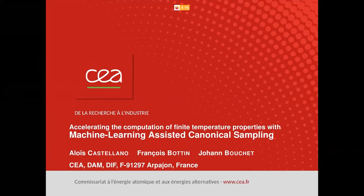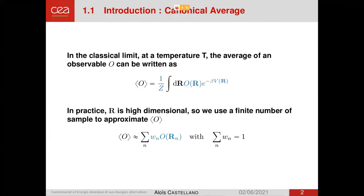The goal of the method is to accelerate the computation of finite temperature properties. And when we think about finite temperature properties, what we are really doing, at least in the classical limit, is a high-dimensional integral. So we integrate some properties we want to average times a Boltzmann weight. And since this integral is very high dimensional, in practice we use a finite number of samples that we call configuration and we compute a weighted sum of the observable on those configurations.